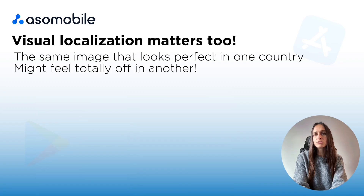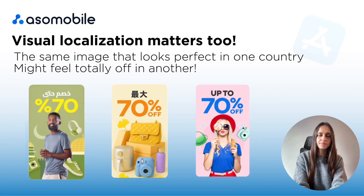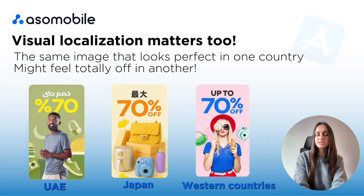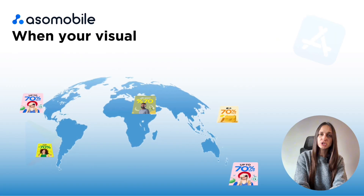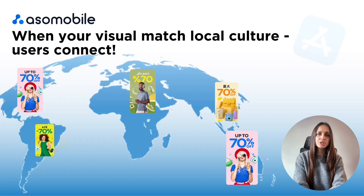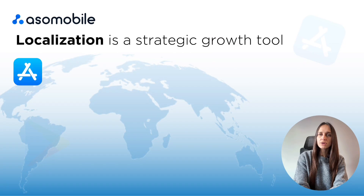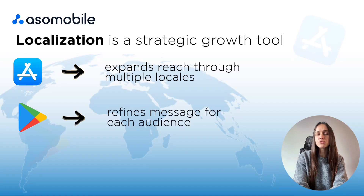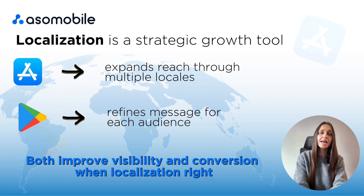The same image that looks perfect in one country may feel totally off in another. For example, in Arabic countries visuals should be more modest and respectful. In Japan, users love expressive anime-style design with bright colors. In Western markets, clean and minimal visuals usually work best. When your visuals match local culture, users instantly feel more connected and are more likely to download your app. A well-localized screenshot can sometimes do more than a translated title. Localization is a strategic growth tool — on iOS it expands your reach through multiple locales, and on Google Play it helps you fine-tune your message for every audience. In both cases, it directly improves visibility and conversion.